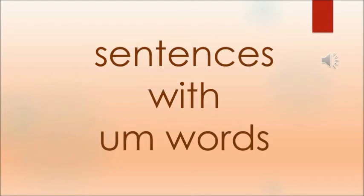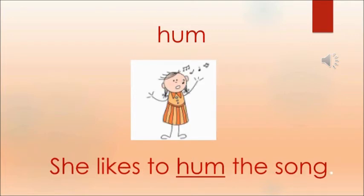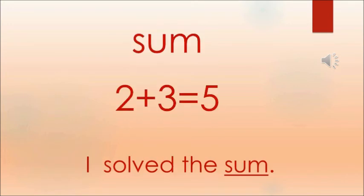Let's see a few sentences with UM words. GUM: My mom got me GUM. The child's mother has got her a GUM stick, so you can say my mom got me GUM. Next sentence with HUM: She likes to HUM the song. Now the next word is SUM: I solved the SUM. The child has solved the SUM, so the sentence is I solved the SUM.